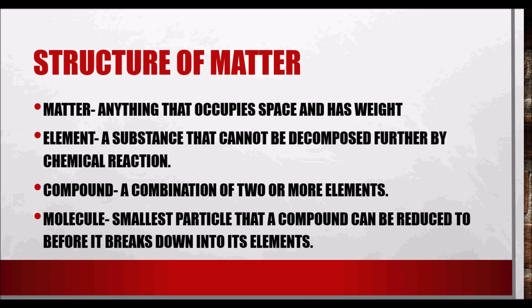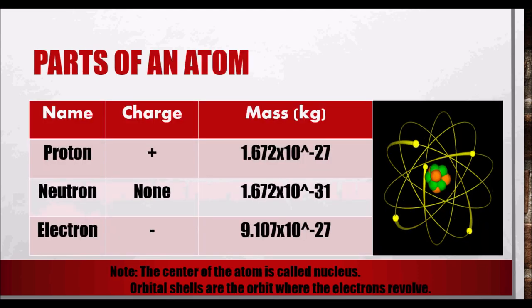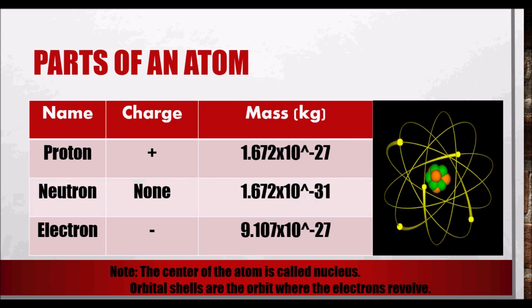Atom is the smallest part that an element can be reduced to while still keeping the properties of the element. Basically, an atom is the smallest particle of matter. We will now focus on the parts of atoms, where we will learn how electricity is formed.